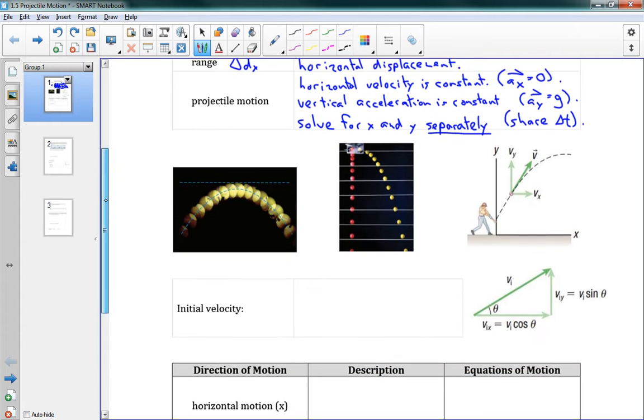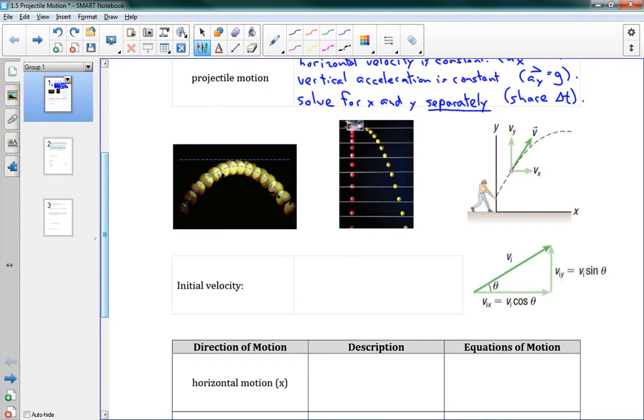Okay, so here we have a few pictures of projectile motion. You can see that they all sort of follow this parabola. That's because they're all undergoing uniform acceleration in the y-dimension and no acceleration in the x.